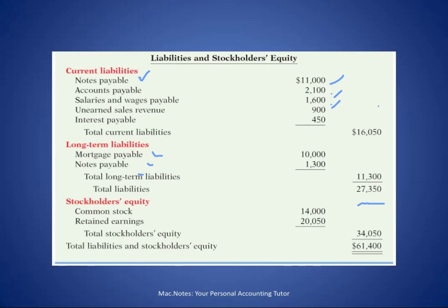The shareholders' equity section is the same as before: common stock — what the shareholders put into the business — plus retained earnings, which belongs to the shareholders. Liabilities plus equity gives the total liabilities and shareholders' equity, which equals total assets. That's how this is called a classified balance sheet.